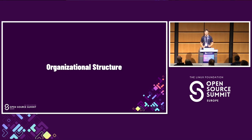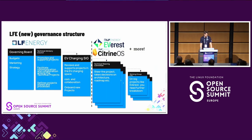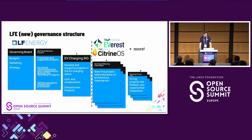I want to explain a bit how Everest was built up and how it fits in LF Energy. Here you can see the quite new governance structure of LF Energy. On the left we have the governing board, which is responsible for budgets, marketing, and strategy. Directly next to it is the Technical Advisory Council, which technically manages the projects. Very new is the SIG layer — the Special Interest Groups — which is a group of projects that can collaborate with each other on similar interests. In our case, the interest is EV charging, so the EV Charging SIG is newly founded and introduced.